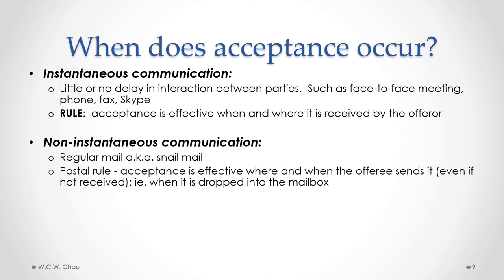The other type of communication is non-instantaneous. The biggest example is regular mail, also known as snail mail. The courts have developed a specific rule dealing with snail mail called the postal rule. The postal rule says that acceptance is effective where and when the offeree sends it. So even if the letter has not been received yet, acceptance is effective when the offeree drops the letter into the mailbox or drops it off at the post office — that's when acceptance is deemed to have occurred, not when the letter is actually received by the offeror.